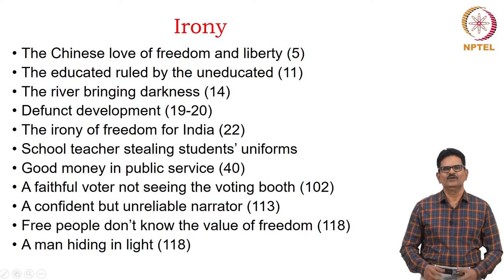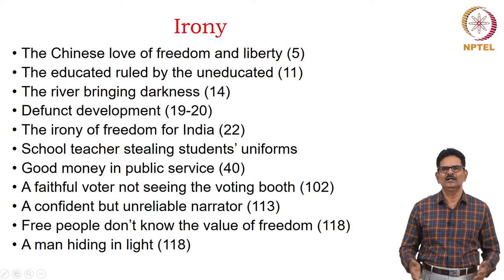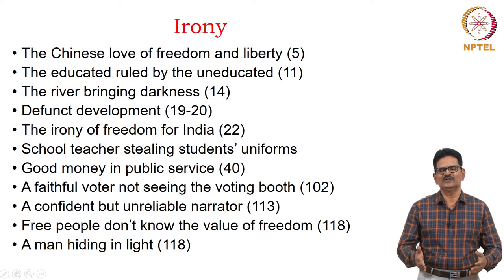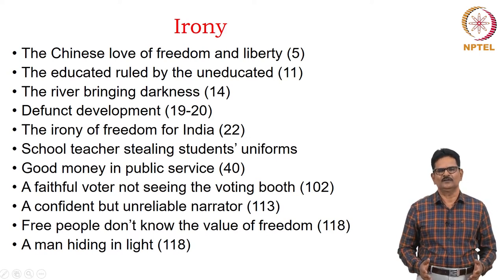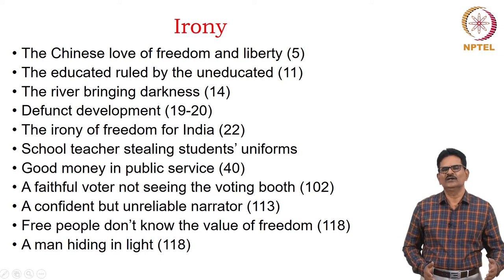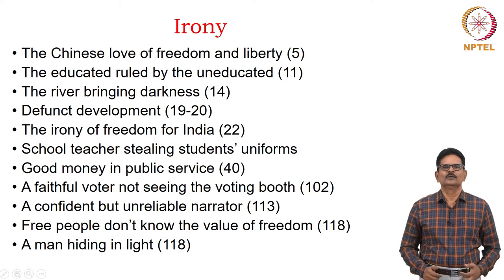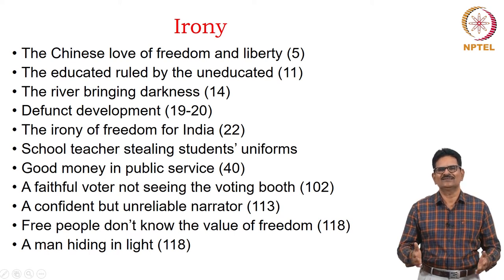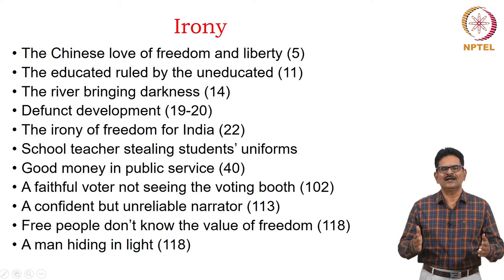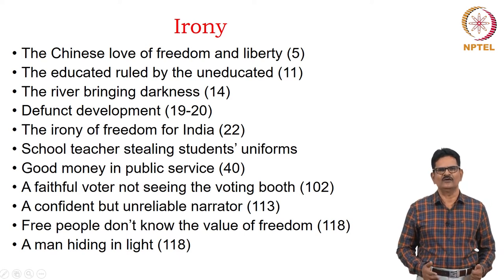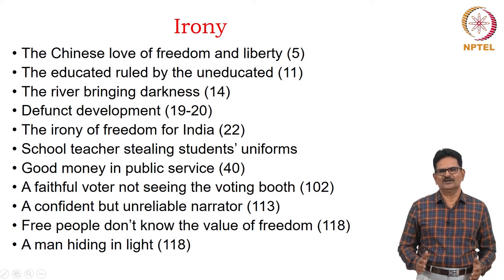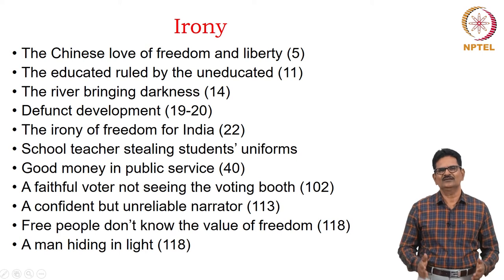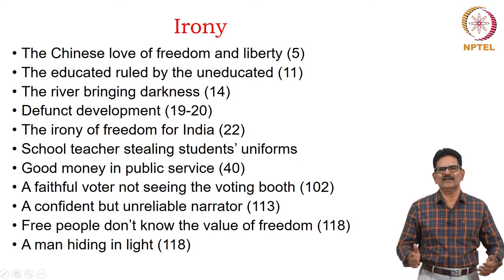That's a big question for us. We also have an example of the school teacher Krishna stealing students' uniforms and also the meals to be given to children. Some people evade tax and don't contribute to the country. We have a faithful voter who goes to the election booth but finds that his vote has already been cast by somebody else, so he is not allowed to vote on his own behalf. We have a narrator who is confident but not so reliable — a confident but unreliable narrator is a case of irony in the novel.